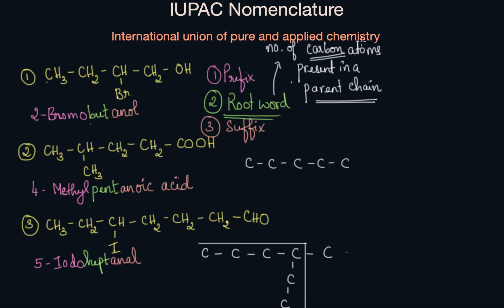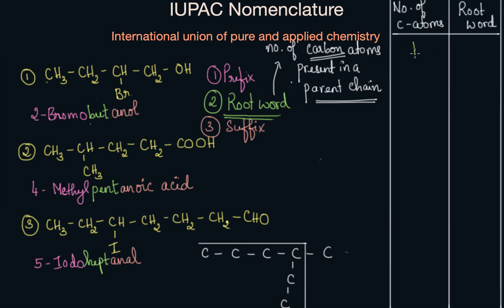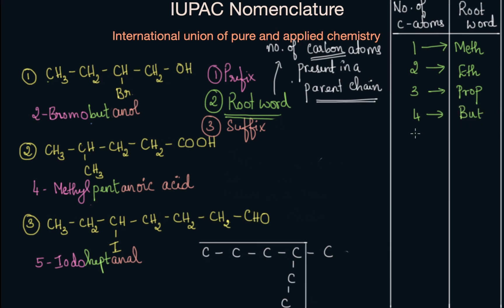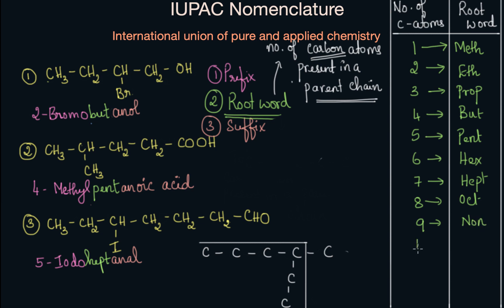What are the root words given for different numbers of carbon atoms? Scientists derived these root words from Greek words. If there is one carbon atom, the root word is meth. Two carbon atoms: eth. Three: prop. Four: but. Five: pent. Six: hex. Seven: hept. Eight: oct. Nine: non. Ten: dec.